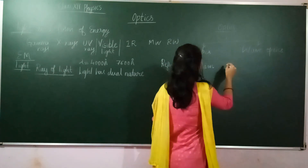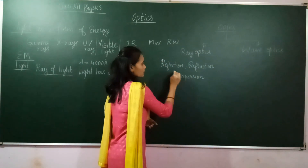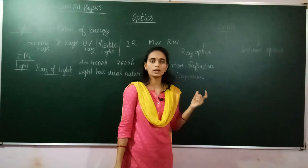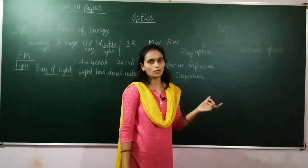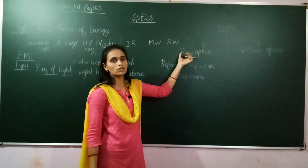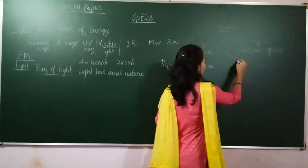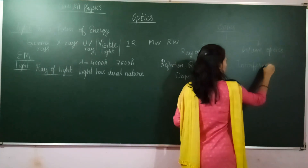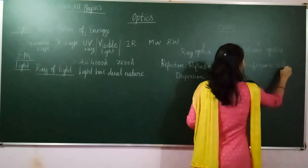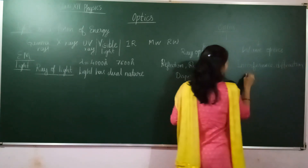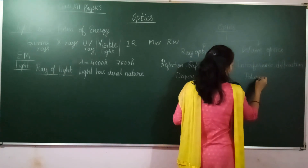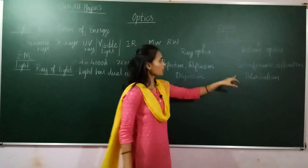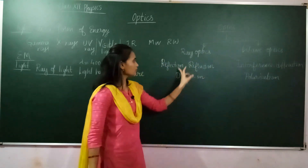Reflection, refraction, and dispersion can be explained with the help of ray optics. However, phenomena like interference, diffraction, and polarization cannot be explained using ray optics — for these, we apply wave optics.